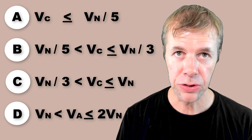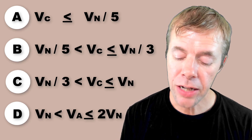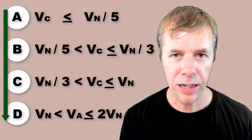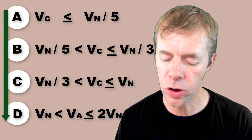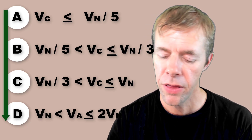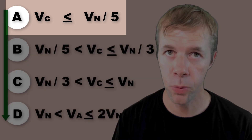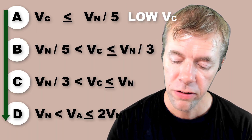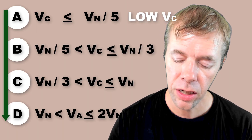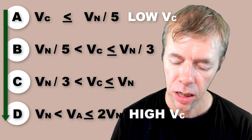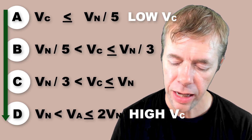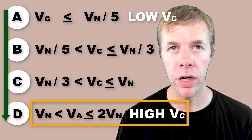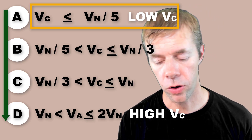All these cases are based on the strength of the concrete. As the strength of the concrete goes up, the cases go up — this would be low V sub C and this would be high V sub C. High capacity of the concrete versus low capacity of the concrete.